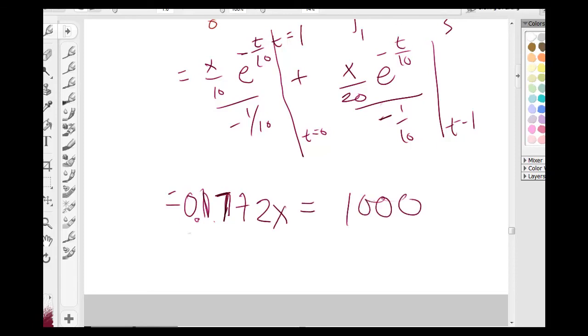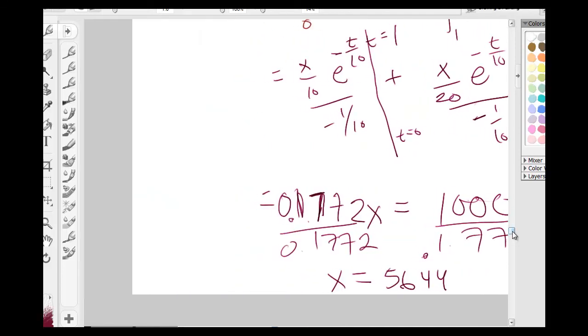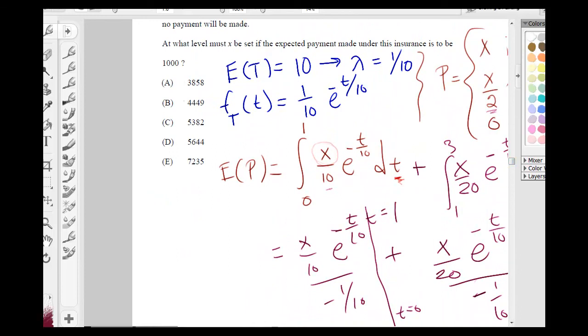You divide by 0.1772 both sides, and you're going to end up with X equals to 5644, which was option D. So, right here. And that's it.